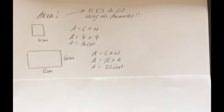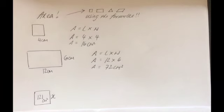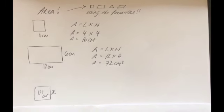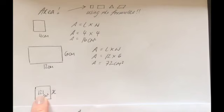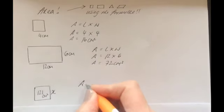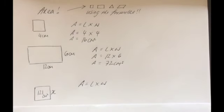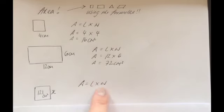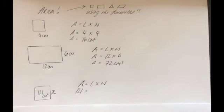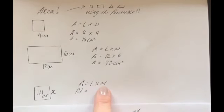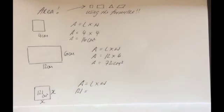Now we're going to jump to questions where we are given the area but looking for a missing length. The first question has a square and again, the first thing you do the minute you identify we're talking about area is write down the correct relevant formula: A equals L times W. This time we fill in for A — we know the area is 121. The width is x and in a square the length must be x as well.